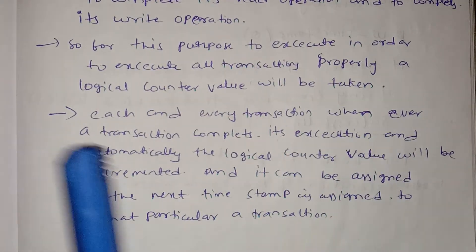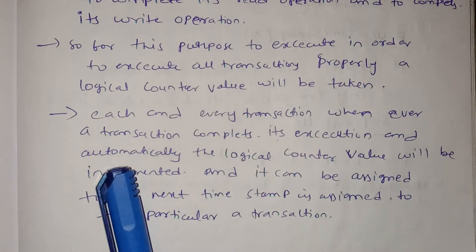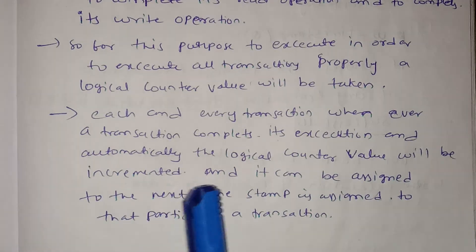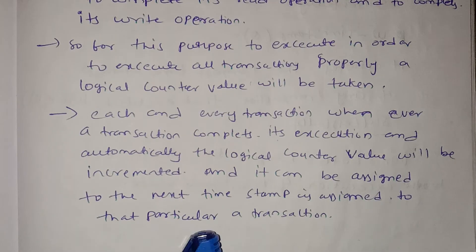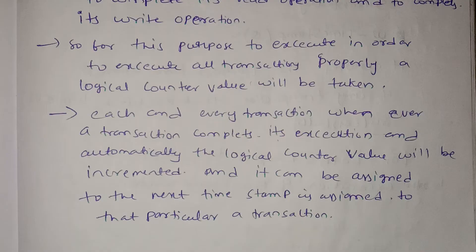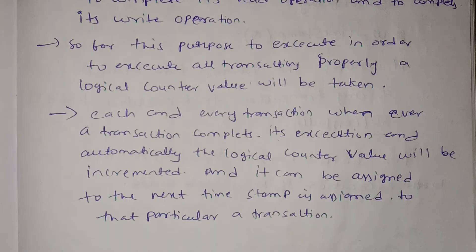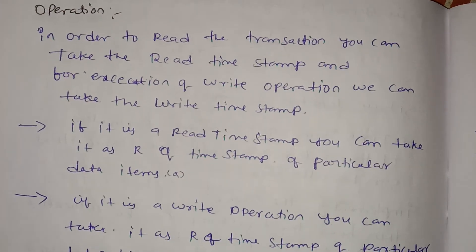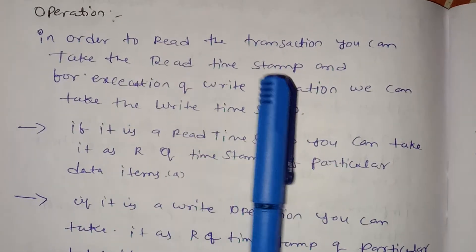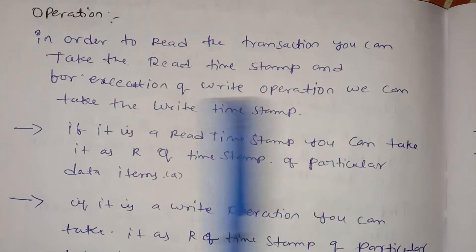Each and every transaction — whenever a transaction completes its execution, automatically a logical counter value is incremented and assigned to the next transaction. The next timestamp is assigned to that particular transaction. For the read operation, you take the read timestamp, and for the write operation, you take the write timestamp.